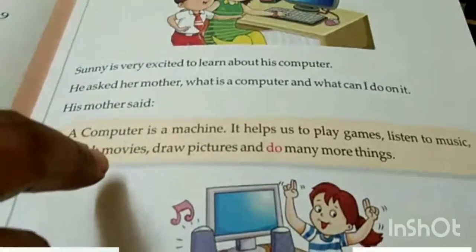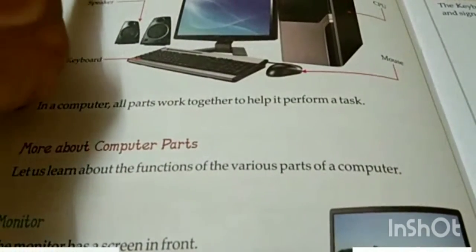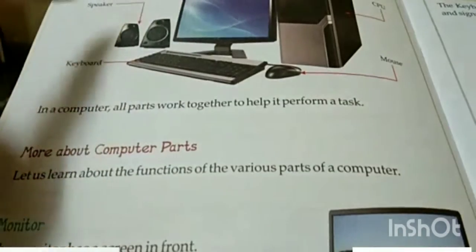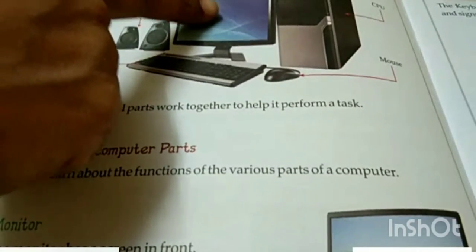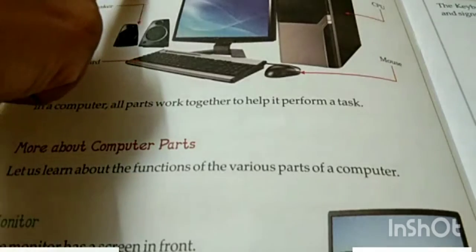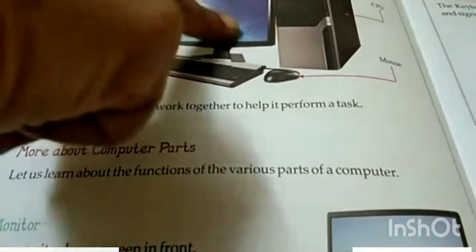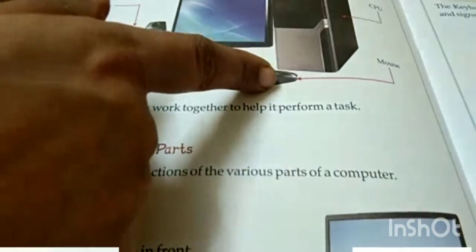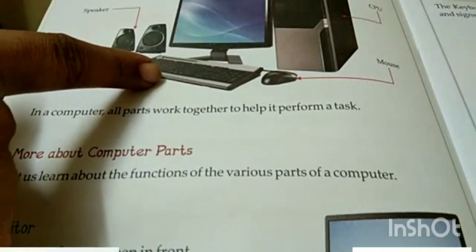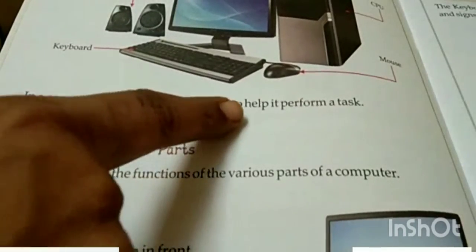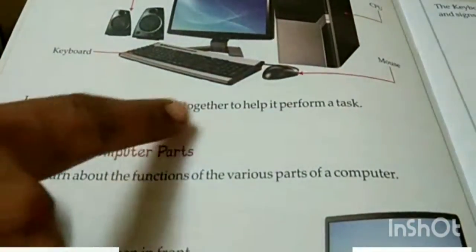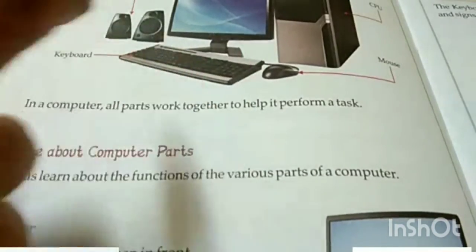Now on page number 2 - yeh computer system hai, poora. Iske parts kaun kaun se hain? This is the monitor - it looks like a TV screen. This is the CPU - yeh CPU jo hota hai, ismein hum bahut saari cheezein store kar sakte hain. This is called mouse. This is keyboard and these are the speakers. In a computer, all parts work together to help it perform a task - yeh ek doosre ko help karte hain taaki jo humne task diya hai wo perform kar sake.